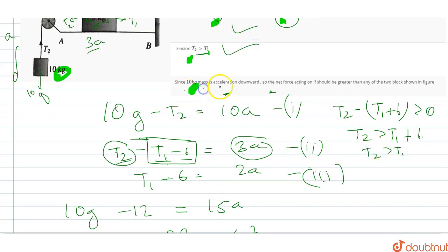Since the 10kg mass is accelerated downward, the net force on it should be greater than any... No, no. Obviously the net force is 10g minus T2 equals 10a. The reason given is wrong but the statement is okay. So I have checked these 4 options.